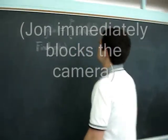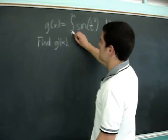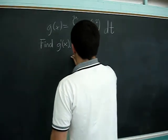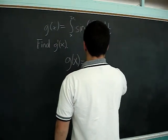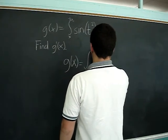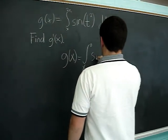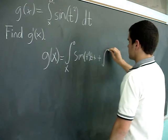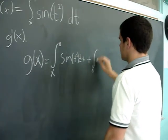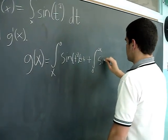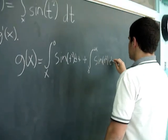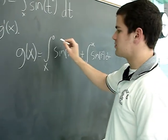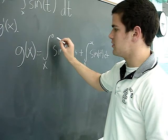In this problem, x appears in both the upper and lower limits. So to evaluate this derivative, you need to break apart the integral. So g of x equals the integral from x to 0 of sine t squared dt plus the integral from 0 to 2x of sine t squared dt. To use the second fundamental theorem, x must be the upper limit, so we need to flip this integral.